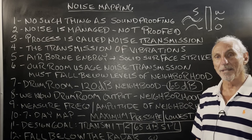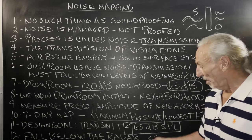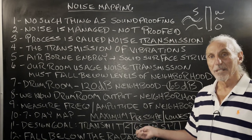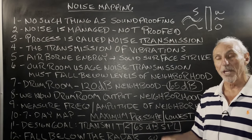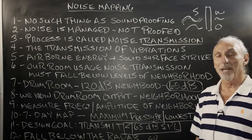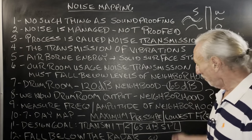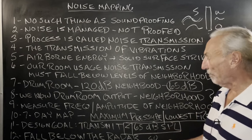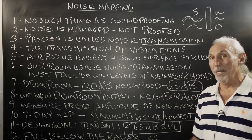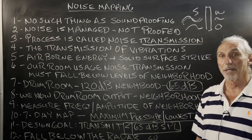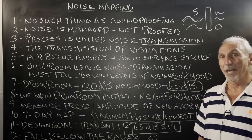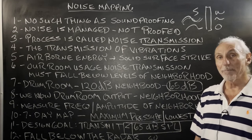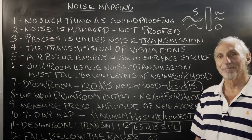Don't be part of that nonsense. Falling below the radar takes numbers. We have to know because every material we use in our barrier or shell is based on the frequency and amplitude of noise. We want to fall below the neighborhood noise, fall below the radar. And the only way to do that is to know the enemy — know how strong it is and what frequency range it's at. Noise mapping — I hope this helps. Thank you for watching.